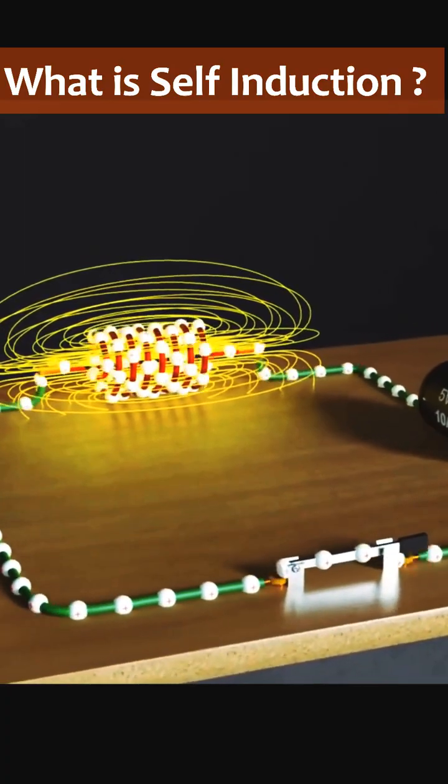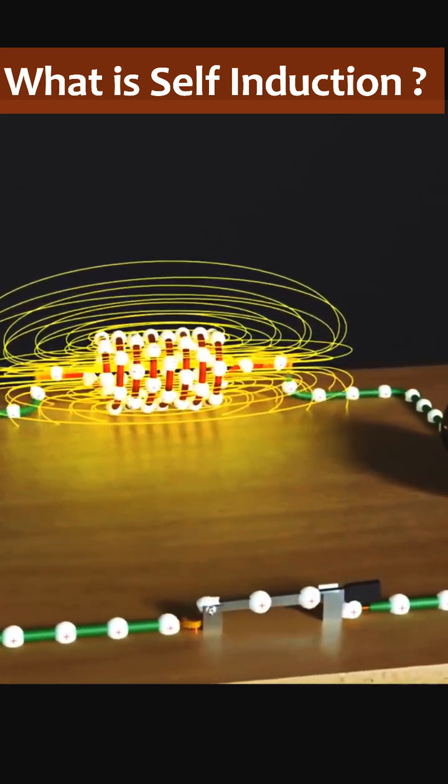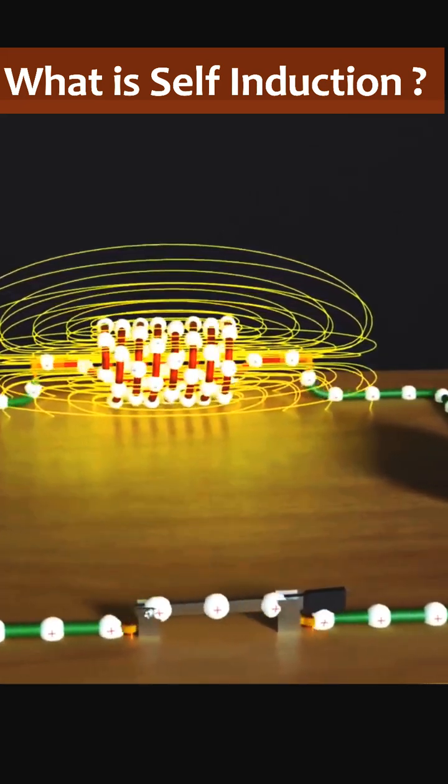When we switch on, the battery will take some time to flow current as per the capability of its EMF. This means the battery will also take some time to reach its highest possible electric current value. This time could be significantly less, but there will be some time.